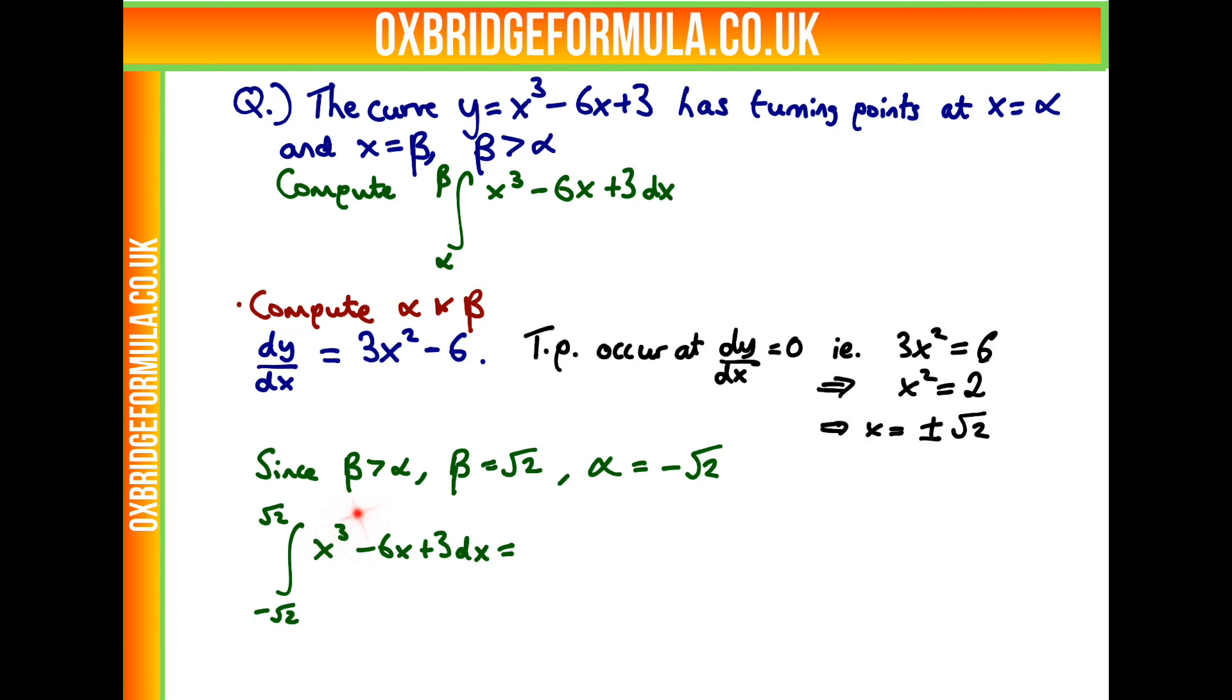We just move the powers up by 1 and divide by the new power, which gives us x to the 4 over 4 minus 6x squared over 2 plus 3x from root 2 to minus root 2.